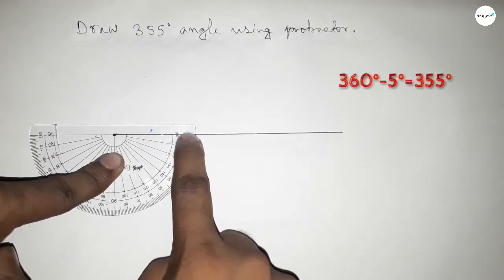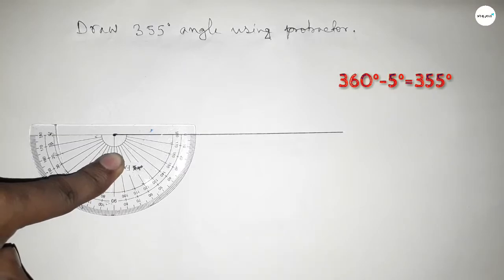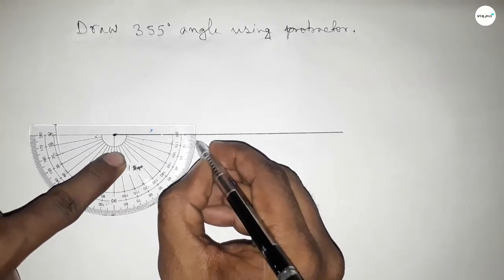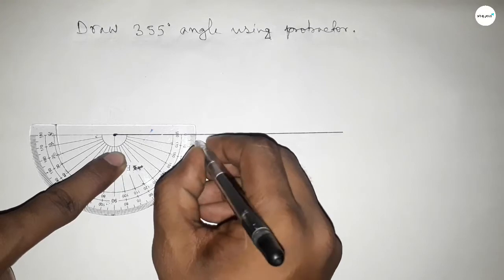If you subtract 5 degree angle from 360, then we can get 355 degree angle. So subtract 5 degrees.